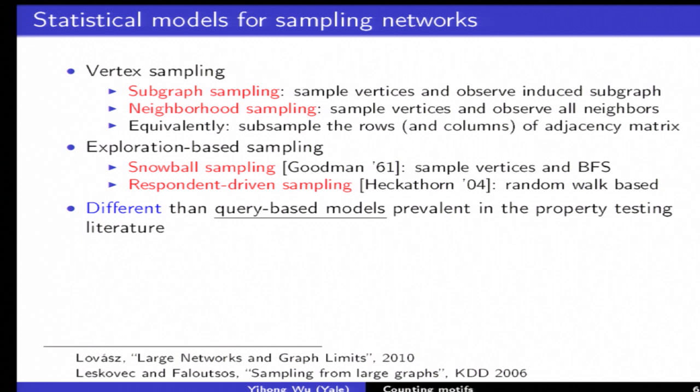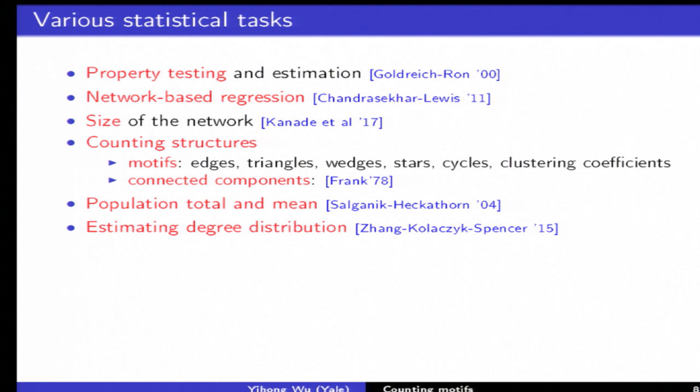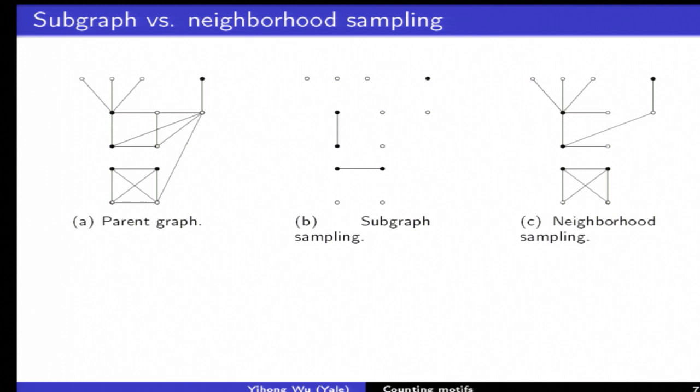Just give you a real example. These are the real parent graph and vertices 1, 2, 3, 4, 5 are sampled. In subgraph sampling you just observe these, and in neighborhood sampling of course you observe much more edges. So it's more informative as you can imagine.